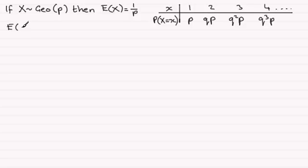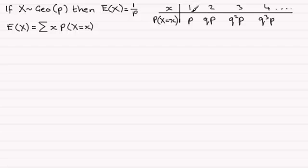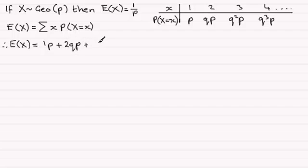To work out E(X), remember it's the sum sigma of the observed value x multiplied by the probability of that random variable equaling x. So we have: 1 times P, plus 2 times QP, plus 3 times Q squared P, and so on. Therefore E(X) equals 1P + 2QP + 3Q²P + 4Q³P + ... — let's call this equation 1.